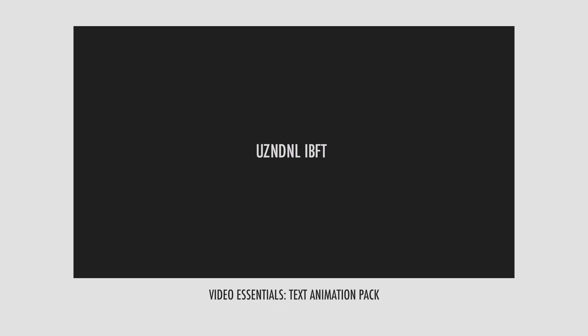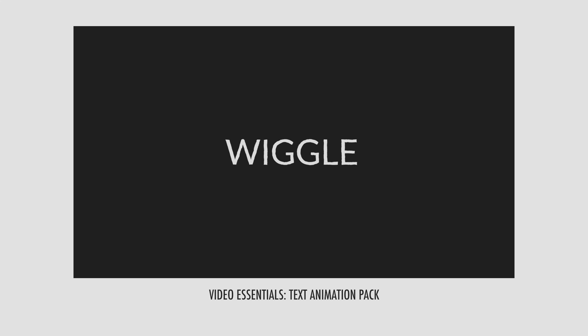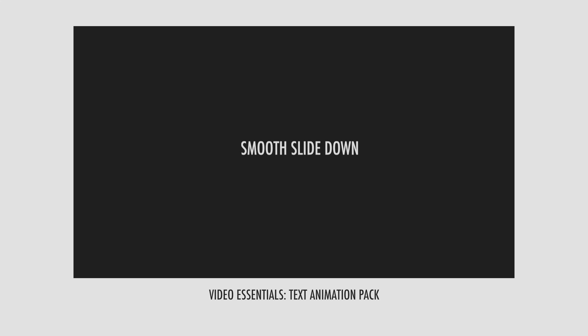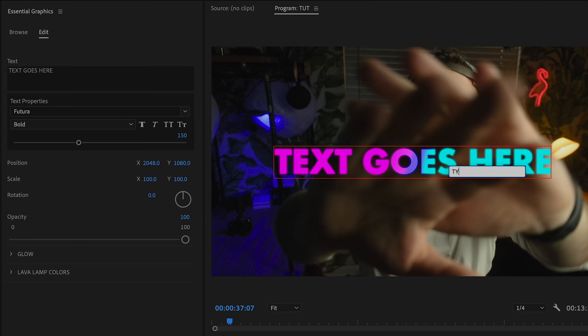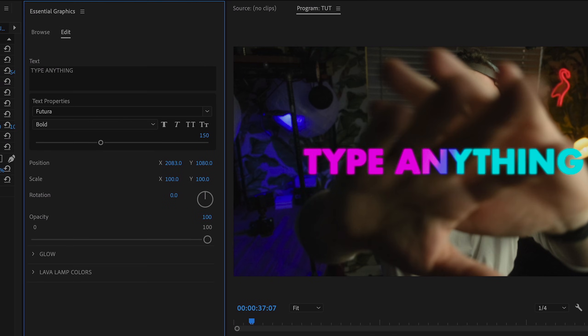I'm really proud of this pack — it's something I've been using for the last year, and it's basically everything you need to start using text animation packs within Premiere Pro in the motion graphic template space. It has all of my favorite animations, everything from RGB glitches to lava lamp text and everything in between. You can customize all of these with the built-in parameters I included, so you can tailor them to your own look.